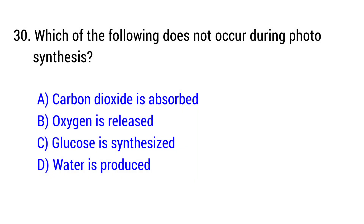Question number 30. Which of the following does not occur during photosynthesis? The right answer is option D, water is produced.